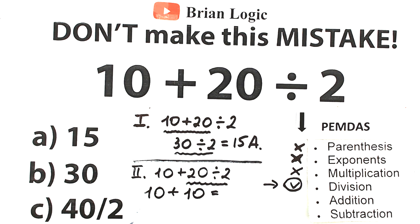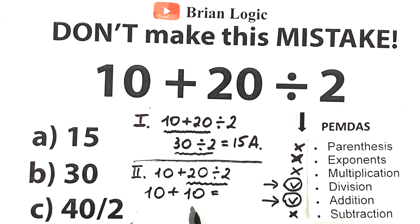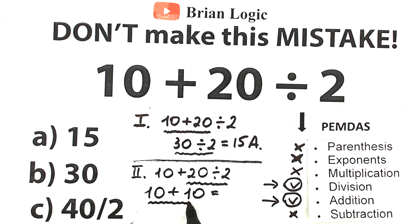Now we don't need any further order of operations, because this is a very simple addition. Addition comes after division. We reject any other steps, and 10 plus 10 — everyone knows that equals 20. It looks like we've solved this question.